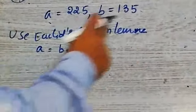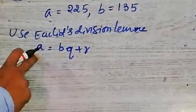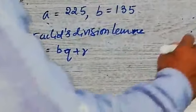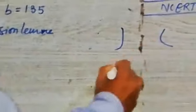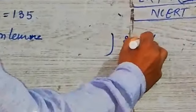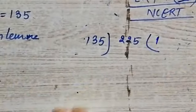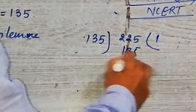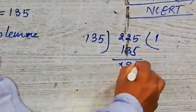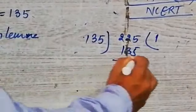Use Euclid Division Lemma. A is equal to BQ plus R. According to Euclid Division Lemma, this is the result. Now we divide 225 by 135. 135 one time, 90 is there. Remainder is 90.